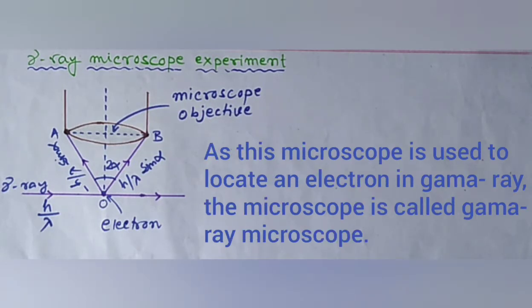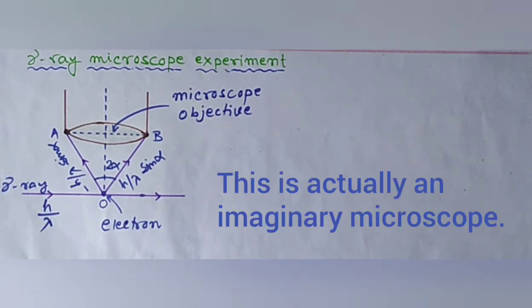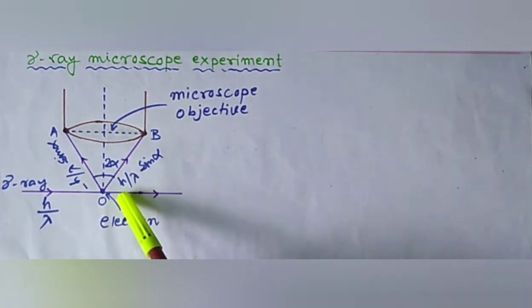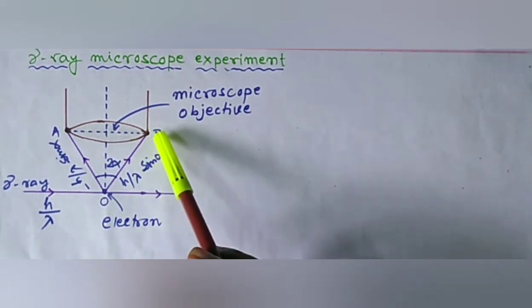As this microscope is used to locate an electron in gamma ray, the microscope is called gamma ray microscope. This is actually an imaginary microscope. 2-alpha is the observing angle of the microscope.